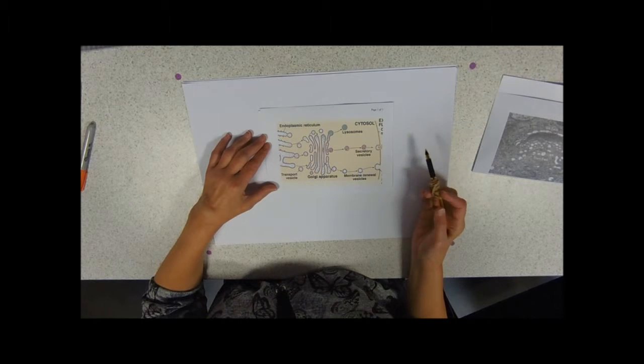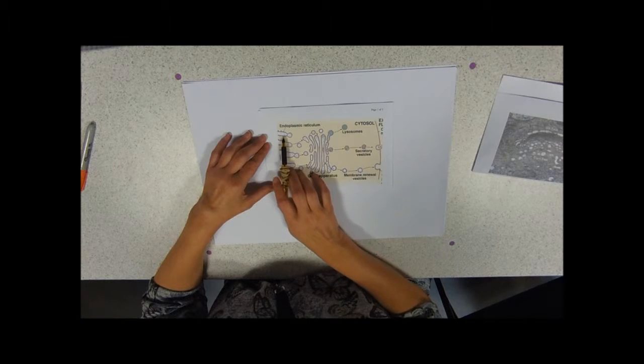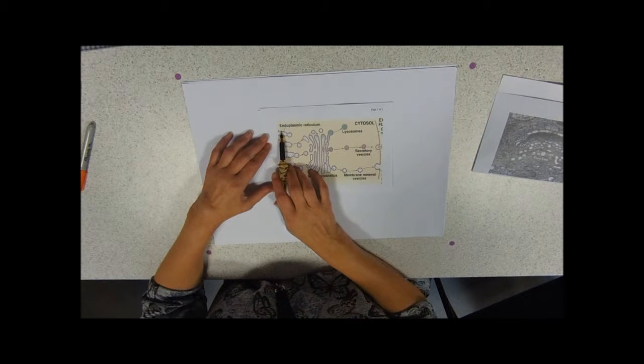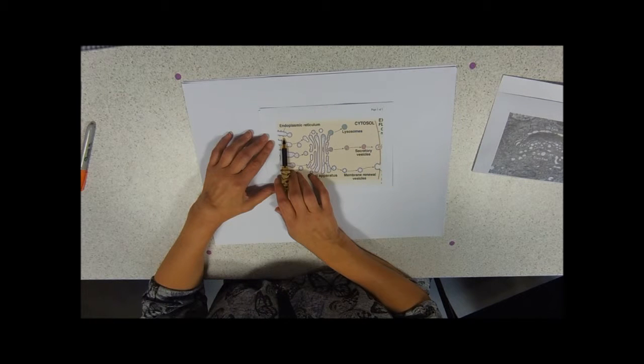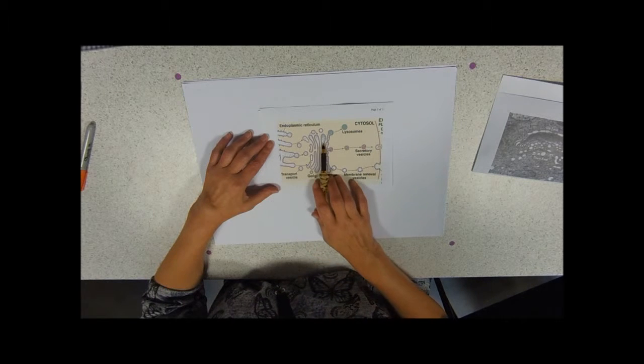Relationships: The endoplasmic reticulum, studded with ribosomes, is where the proteins are actually made. So they're made here and then modified there.